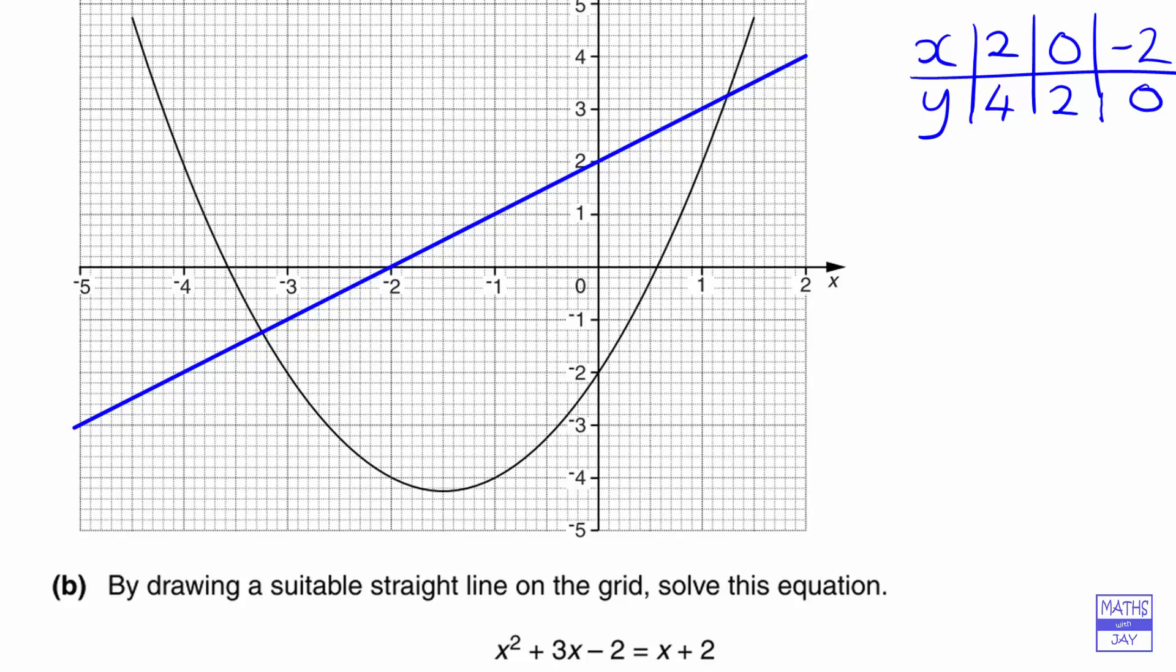So now all we need to do is have a look at where that line is cutting the parabola y equals x squared plus 3x minus 2. So as we'd expect, we've got two solutions, and the left hand one, it looks as if x is, what would you say, minus 3.2.